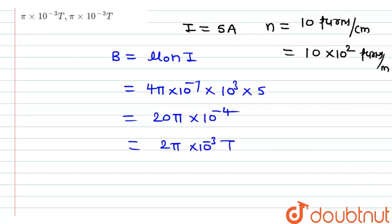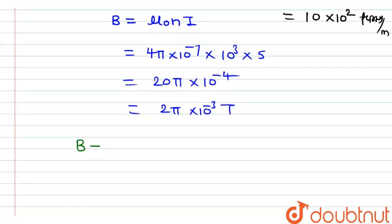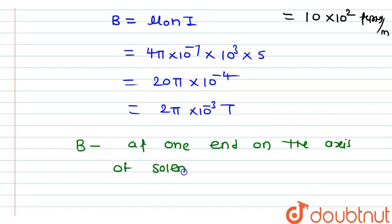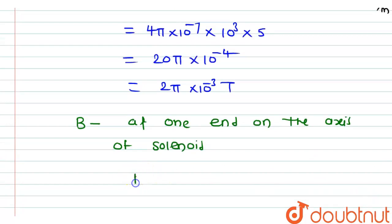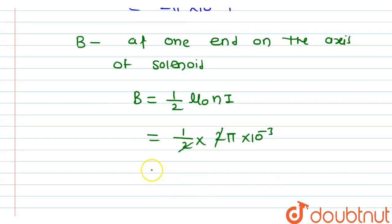Now the magnetic field near one edge of the solenoid, or magnetic field at one end on the axis of the solenoid, is calculated by the formula B = ½ μ₀nI. We already calculated μ₀nI = 2π × 10⁻³, so ½ × 2π × 10⁻³ — the 2s cancel — giving π × 10⁻³ tesla.